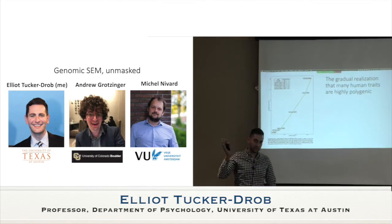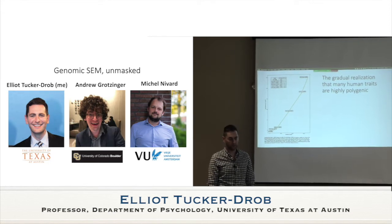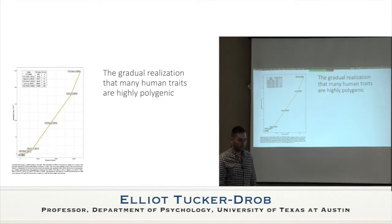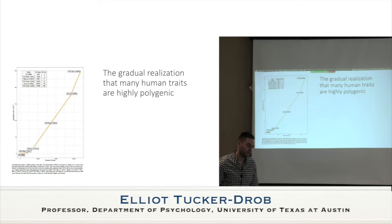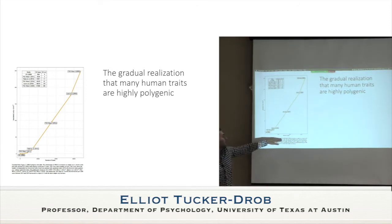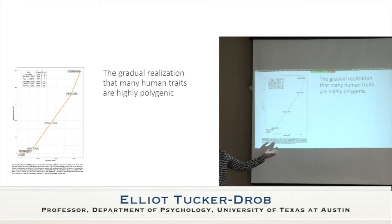I'm going to give you a little bit of background that you're already familiar with from the past week and a half. Here is the plot of the number of independent loci discovered for schizophrenia as a function of the number of cases in the discovery sample, which is also strongly correlated with when the paper was published. We see the same sort of story for all sorts of GWAS traits, including psychiatric traits.